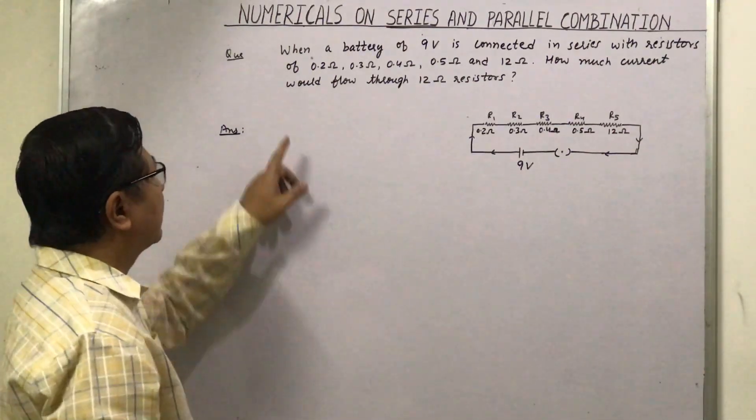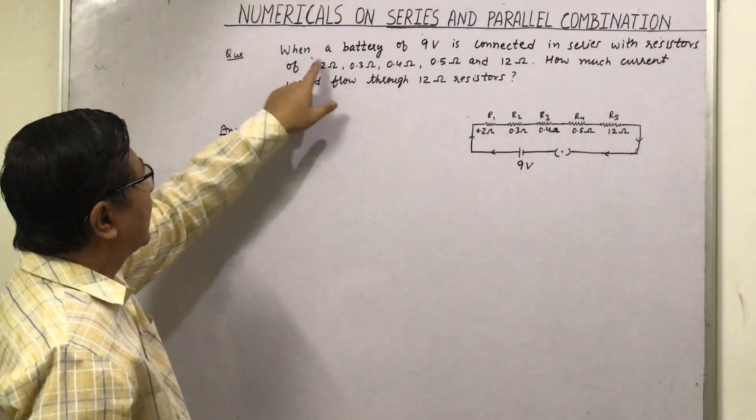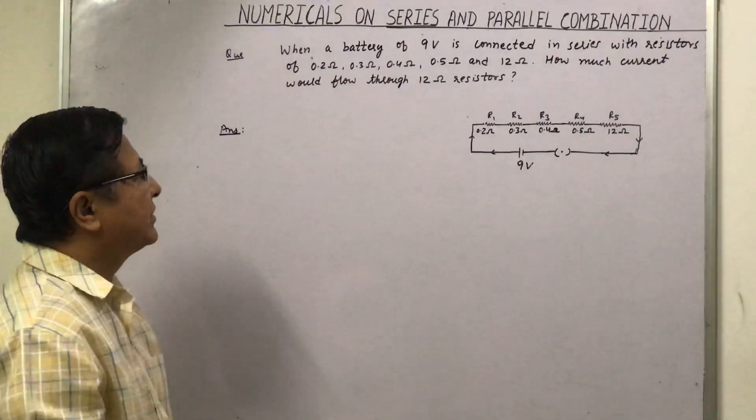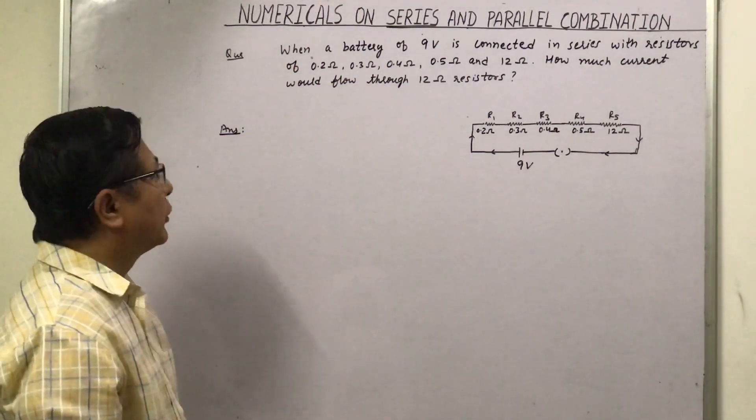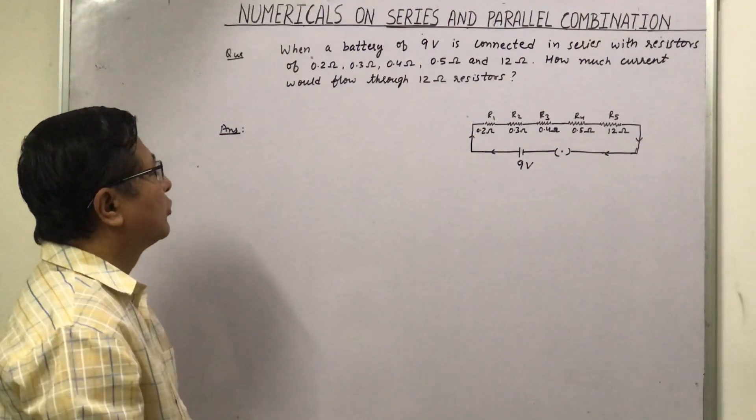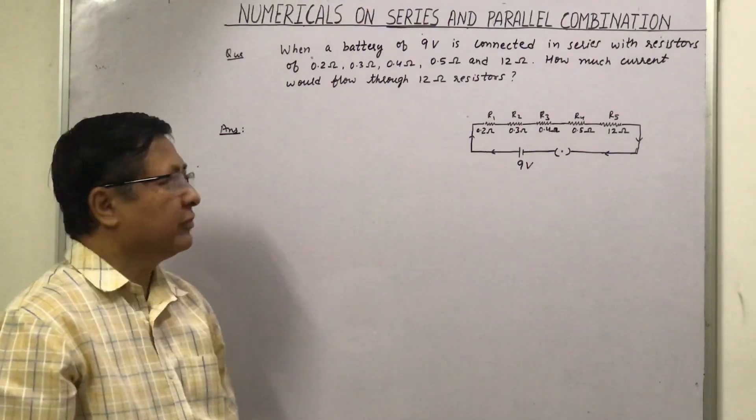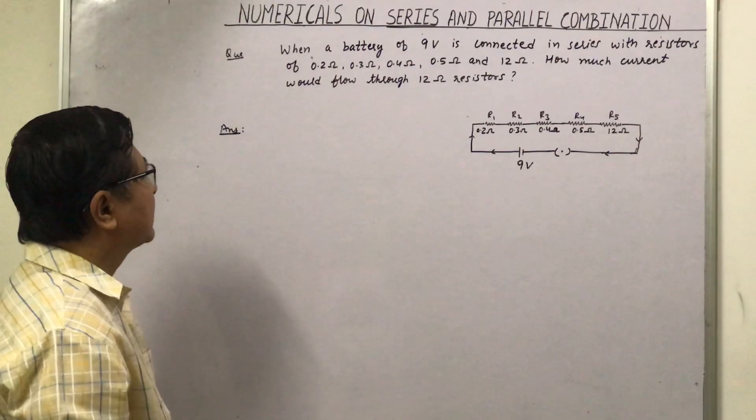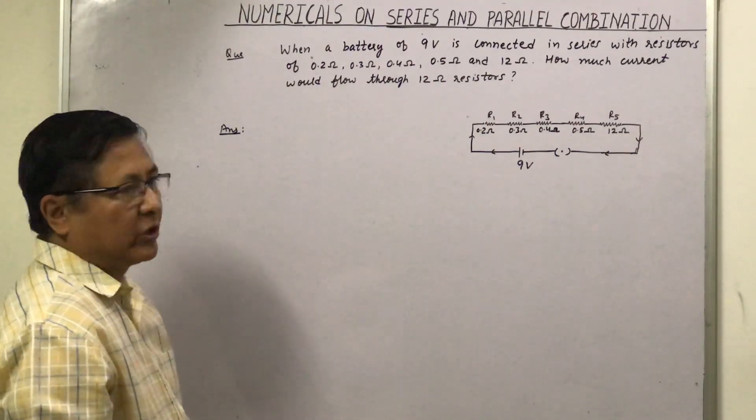Hello students, now let us take one more example. When a battery of 9 volt is connected in series with resistors of 0.2 ohm, 0.3 ohm, 0.4 ohm, 0.5 ohm and 12 ohm, how much current would flow through the 12 ohm resistor?